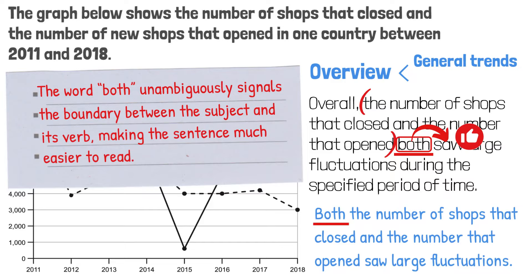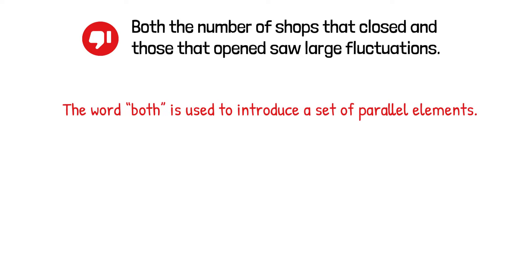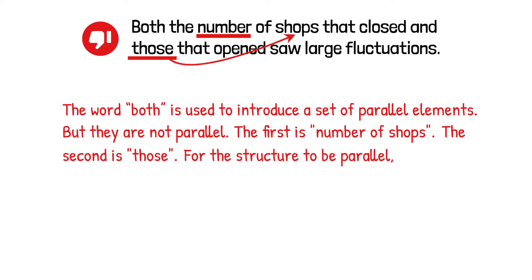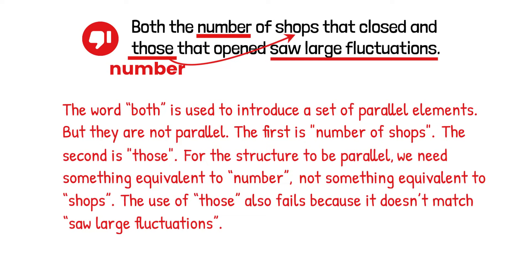However, you shouldn't write it like this: 'Both the number of shops that closed and those that opened saw large fluctuations.' The word 'both' is used to introduce a set of parallel elements, but they are not parallel. The first is 'number of shops' and the second is 'those,' which refers to shops. For the structure to be parallel, we need something equivalent to 'number,' not something equivalent to 'shops.' The use of 'those' also fails because it doesn't match 'saw large fluctuations' — the shops didn't see fluctuations, the number did.